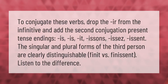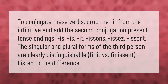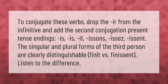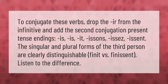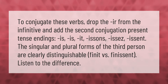To conjugate -IR verbs, drop the -IR from the infinitive and add the second conjugation present tense endings. The singular and plural forms of the third person are clearly distinguishable.